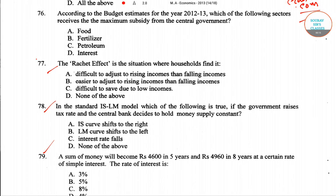First I will start with question number 77. It is asked that the ratchet effect is the situation where: (A) household find it difficult to adjust to rising income, (B) easier to adjust to rising incomes than falling incomes, (C) difficult to save due to low incomes, and (D) none of the above.